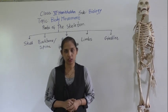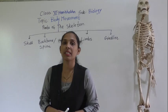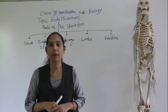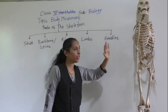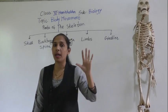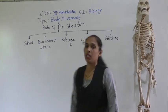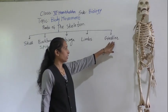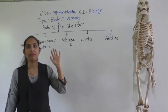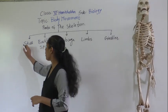Hello dear students and welcome to our biology session. We are discussing body movement, and today we will start a new point: parts of the skeleton. There are many different parts of the skeleton. The skeleton consists of five main parts: skull, backbone or spine, rib cage, limbs, and girdles. We are going to see each one in detail, starting with the first part — the skull.